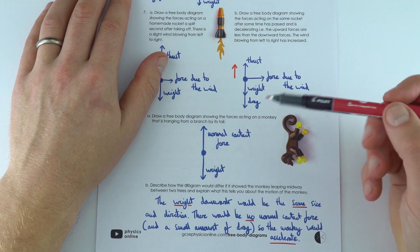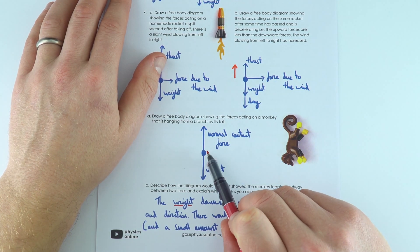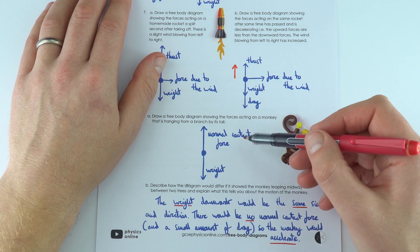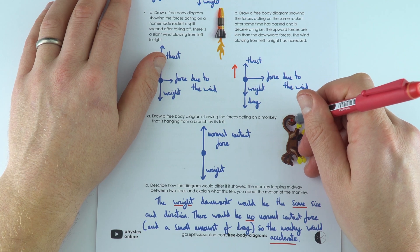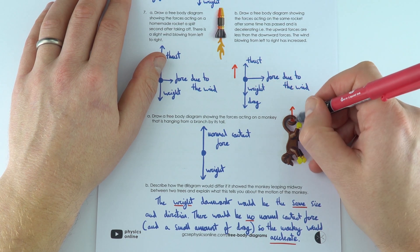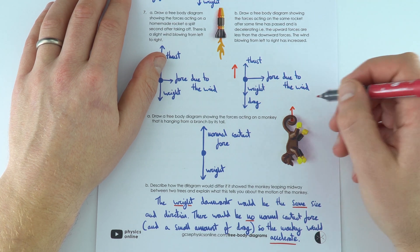Now we've got the monkey just hanging from the tree. Again, we've got the weight force acting down and we've maybe got the normal contact force, and that's provided by the branch that it's hanging from pushing up on the tail. So if you imagine there's a branch just going through the tail here, there's going to be the force acting upwards from the branch acting on the tail of that monkey.